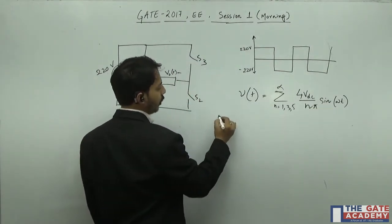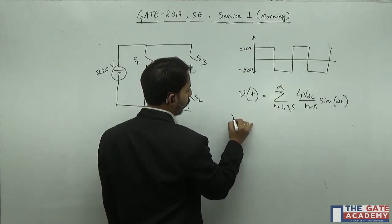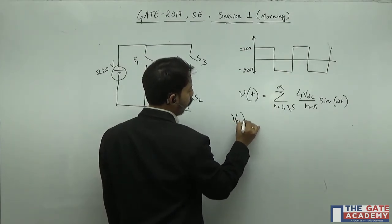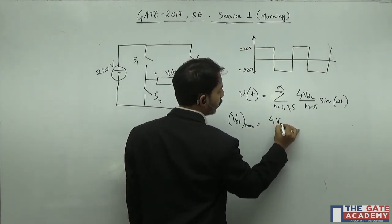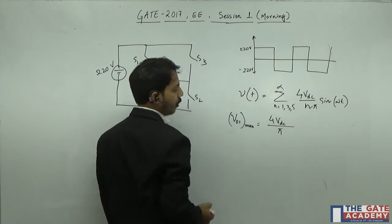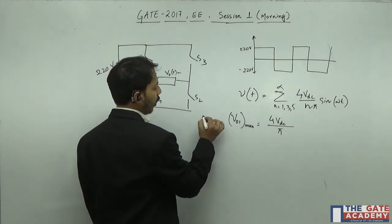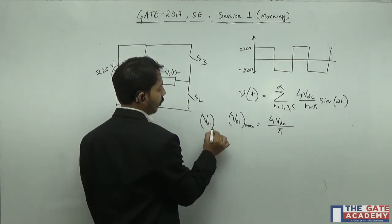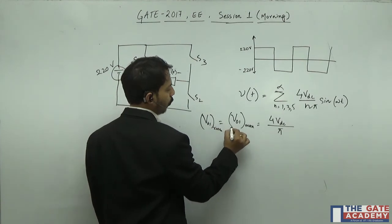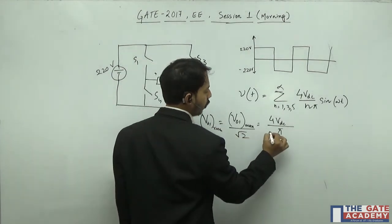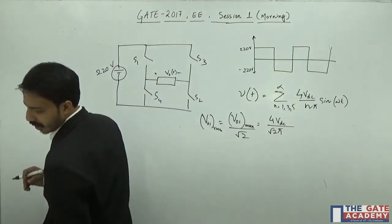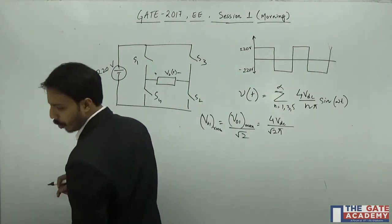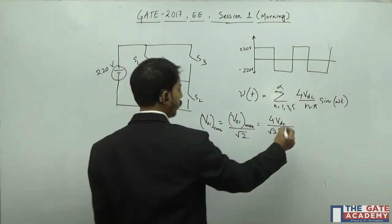We see the max value of the fundamental, or V01 max value will be 4 VDC by pi. We know RMS value V1 RMS will be max by root 2. Now VDC value is given in the question, it is 220 volts. So if we put the value here, 220 volts, and calculate, we'll get the answer is 198.06 volts.